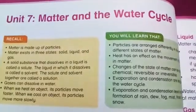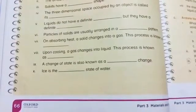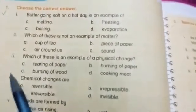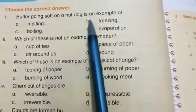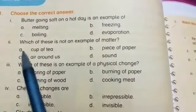Students, we are doing working of unit 7: matter and the water cycle. Open your books to page number 66. In today's class we are going to do the objective part of this unit. Choose the correct answer — take out your blue color pencils. Butter going soft on a hot day is an example of what? Butter softening: number A melting, B freezing, C boiling, D evaporation.